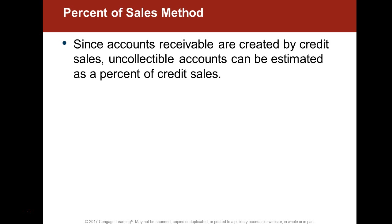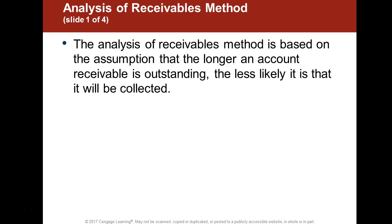There is also the percentage of sales method, which is the income statement method. You're saying a certain percentage of your sales will be uncollectible. If you have a million dollars in sales and expect 1% to go bad, you create an allowance for that 1%. The other method — categorizing the aging of your receivables and determining how much is uncollectible based on age — is called the balance sheet method. You create an entry to determine what your allowance should be and then record the adjustment.